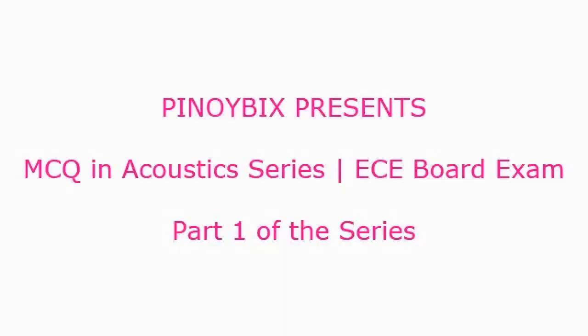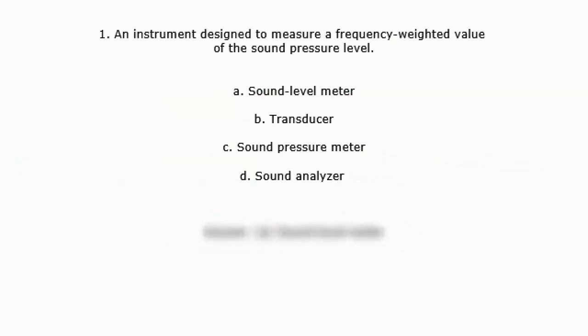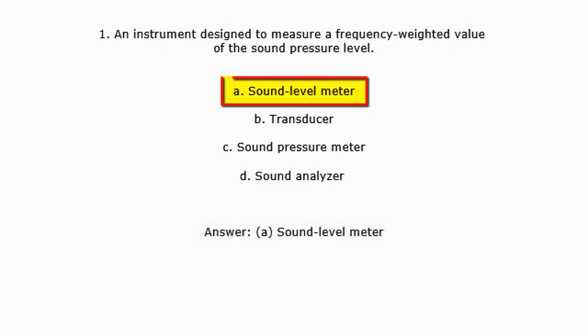PNWBX presents MCQ in Acoustics Series, E-Sport exam, part 1. Question 1: An instrument designed to measure a frequency-weighted value of the sound pressure level. A. Sound level meter, B. Transducer, C. Sound pressure meter, D. Sound analyzer. Answer: A. Sound level meter.